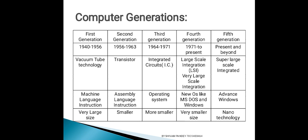Second generation computer में transistor का इस्तेमाल होता था। Transistor के इस्तेमाल होने की वजह से जो programs लिखे जाते थे वह assembly language में लिखे जाते थे। As compared to first generation computers, these are smaller in size.